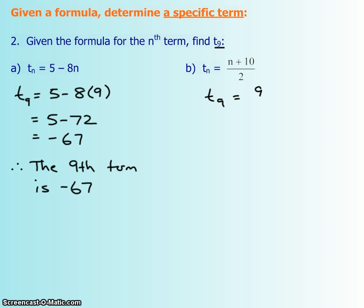So, 9 instead of your n, plus 10 over 2, which is 19 over 2. And you can either keep it like that, or you can change it to a decimal. It should be 9 and a half, I believe. So therefore, the ninth term in this sequence is 9.5, or 19 over 2.